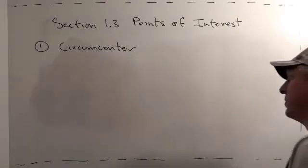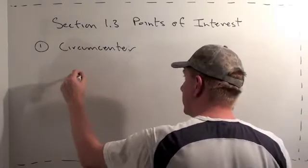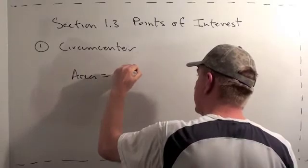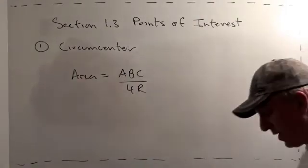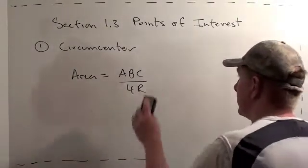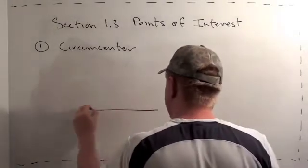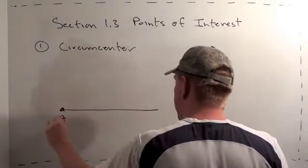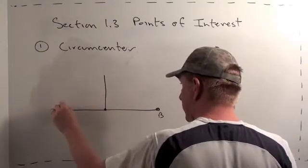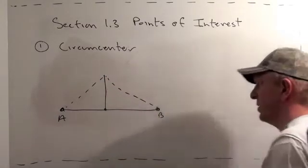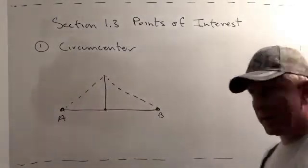Number one: circumcenter. You'll remember from section 1.1 we learned a formula about the radius of the circumscribed circle, that area equals ABC over 4R. The question becomes now, how do we find the circle that circumscribes a given triangle? The first thing you have to know, just a very simple fact from geometry: if you have a line segment AB, the perpendicular bisector is equidistant — any point on the perpendicular bisector is equidistant from the two endpoints of the line.